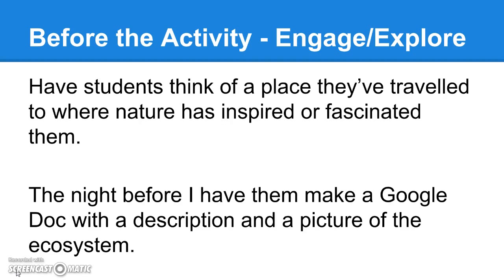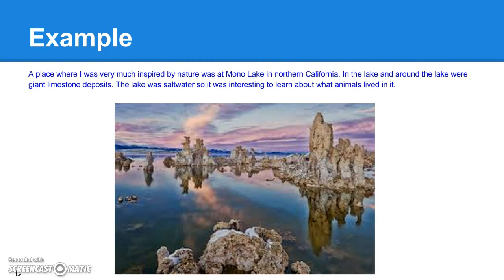Before the activity, have students think of a place they've traveled to where nature has inspired or fascinated them. The night before, have them make a Google Doc with a description of that place and a picture of that ecosystem. It's fine if it's somewhere they haven't been, but they need to know a lot about it — though it's better if it's somewhere they've actually been. Here's an example: a student gave a description and picture of Mono Lake in Northern California with its Tufa Towers, which is a pretty unique ecosystem.